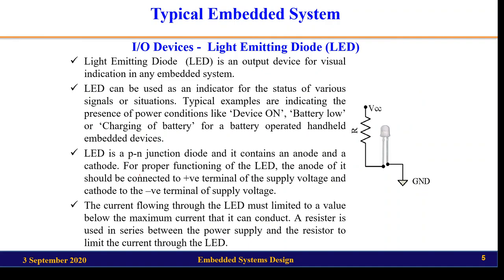The first I/O device we will study is the LED — Light Emitting Diode. It is an output device, generally used for visual indication in an embedded system. It can be used as an indicator for the status of various signals or situations — for example, to indicate a fire in an industry, to indicate a device is on, a low battery condition, or a charging state.